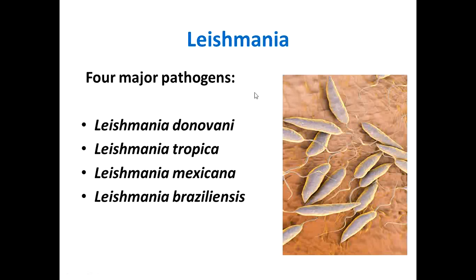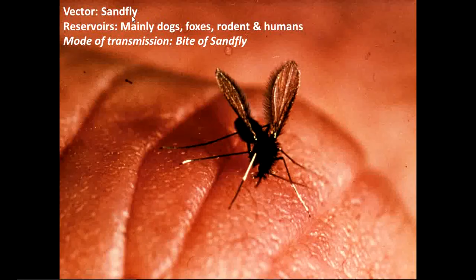Leishmania is a genus with various species: Donovani, Tropica, Mexicana, and Braziliensis. The vector is the sandfly and the mode of transmission is through the bite of a sandfly. Reservoirs can be animals and humans depending on geography. In the Mediterranean, Middle East, Southern Russia, and parts of China, dogs and foxes are reservoirs. In sub-Saharan Africa, rats and small carnivores are the main reservoirs, while in India, Kenya, and Pakistan, humans are the only reservoir.